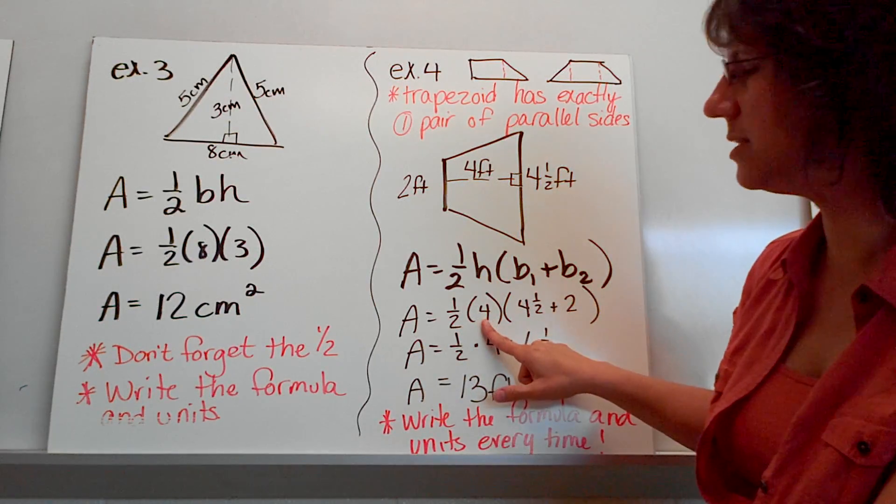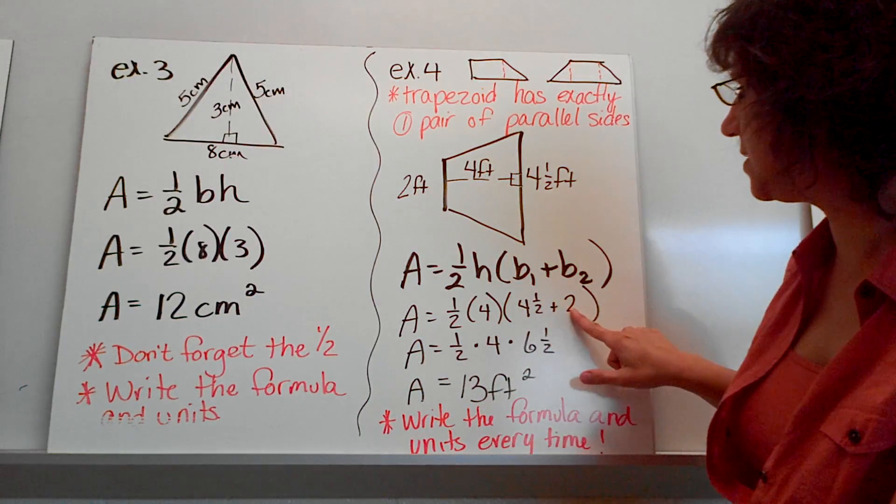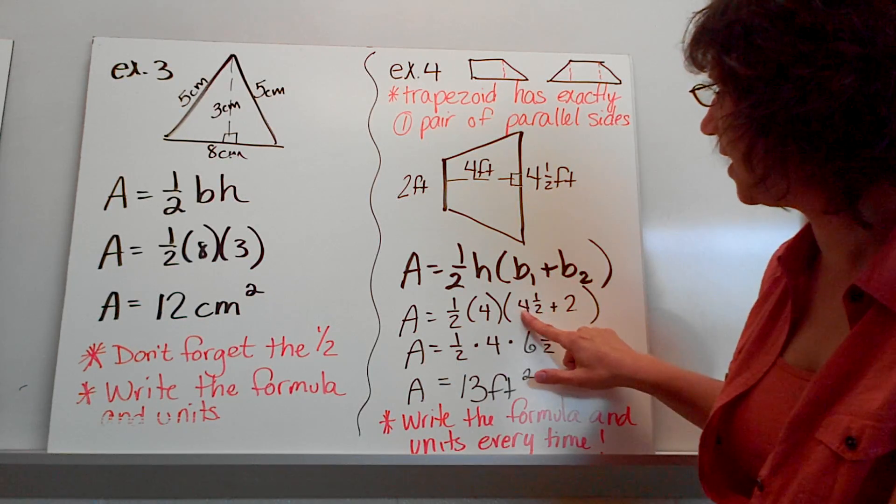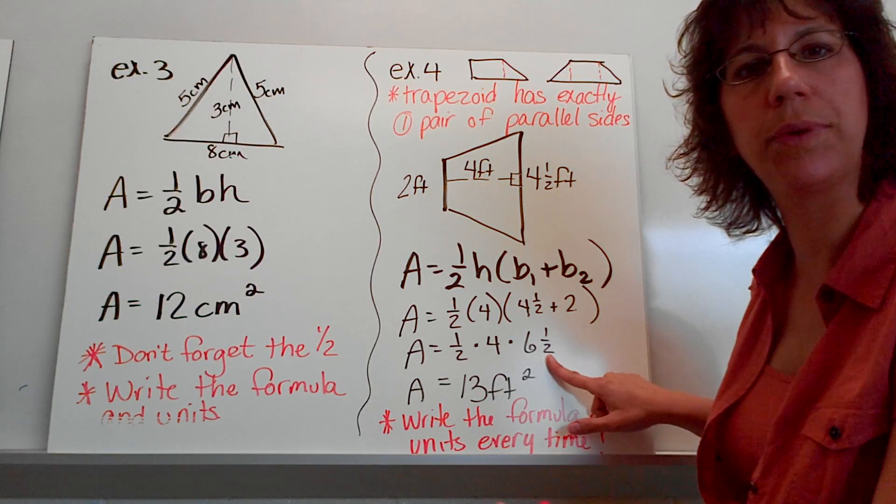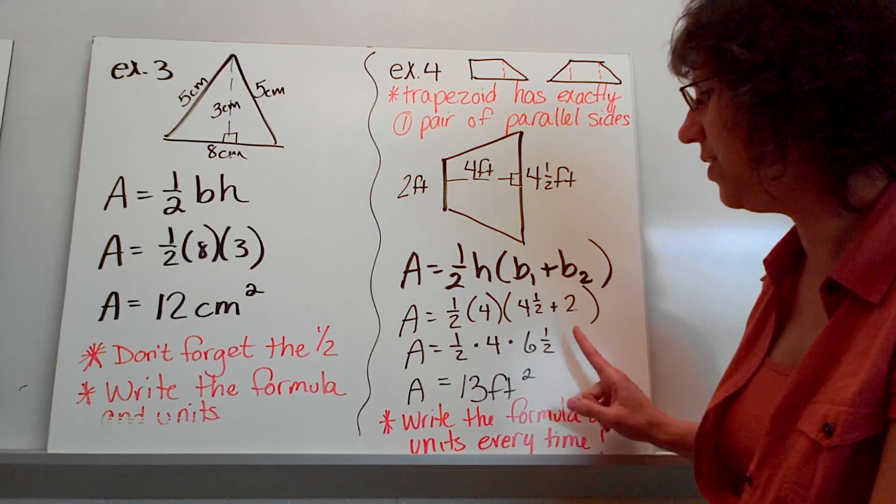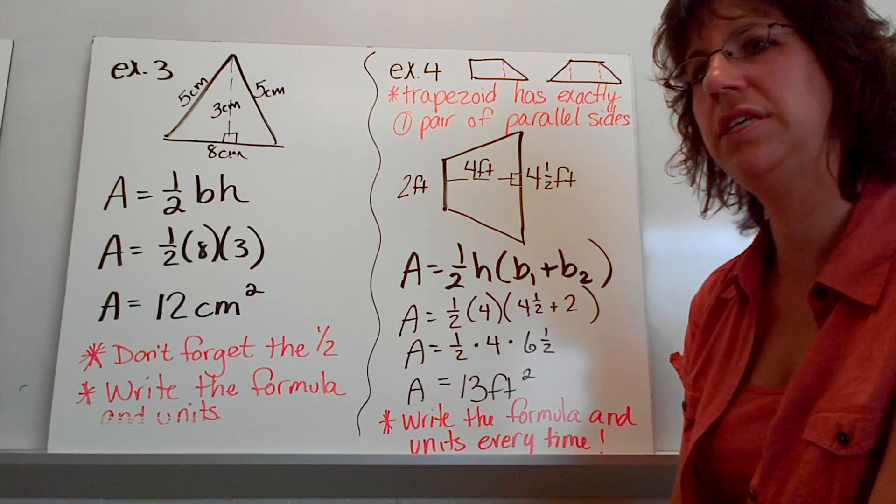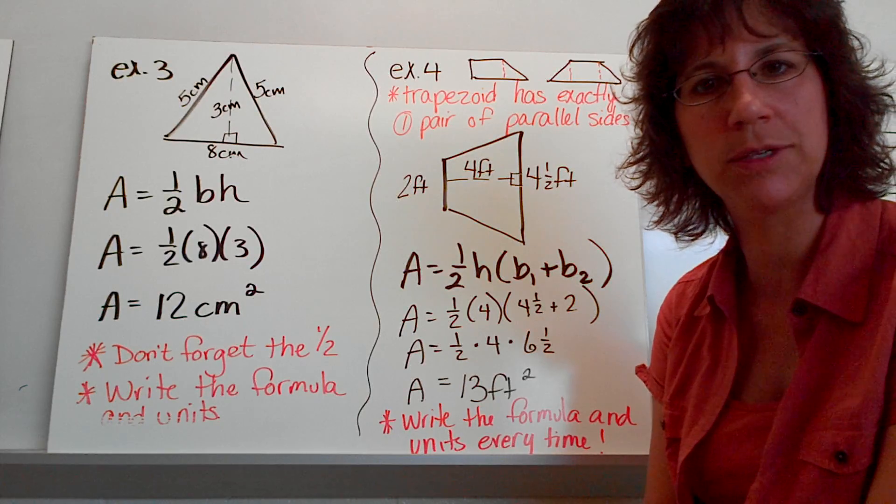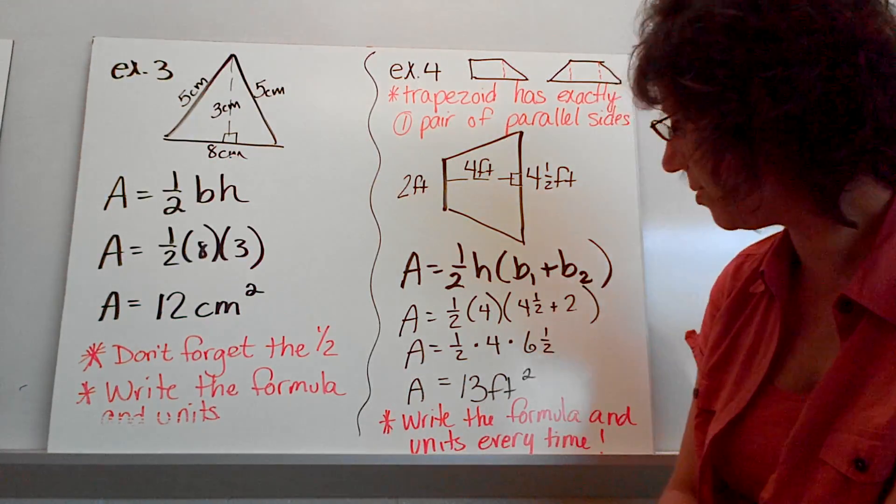It does not matter which order you put them in. Again, the commutative property takes care of that. You're going to be adding the two bases together. Remember, order of operations. You want to add what's in parentheses first, and then multiply everything together. When you're all done, you should get 13 feet squared. Remember, you can pause me at any time. Just go ahead and hit that pause button and catch up to where we're at if you need more time to write this down. If you've got it, let's keep going.